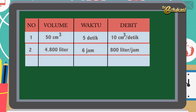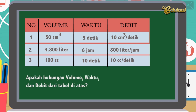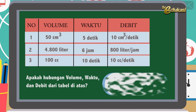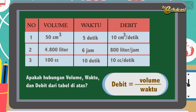Nomor 3: volume 100 cc, waktu 10 detik, debitnya 10 cc per detik. Coba anak-anak, apa hubungan antara volume, waktu, dan debit? Betul, debit sama dengan volume dibagi waktu. Jelas ya? Mudah ya?